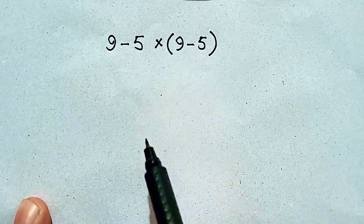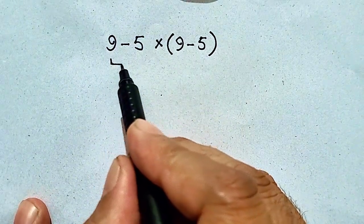9 minus 5 times 9 minus 5. Here it is looking very simple.